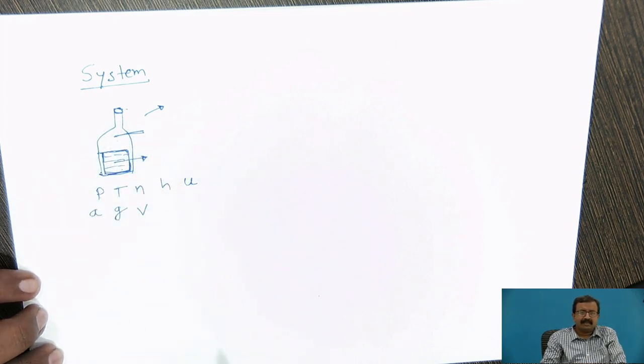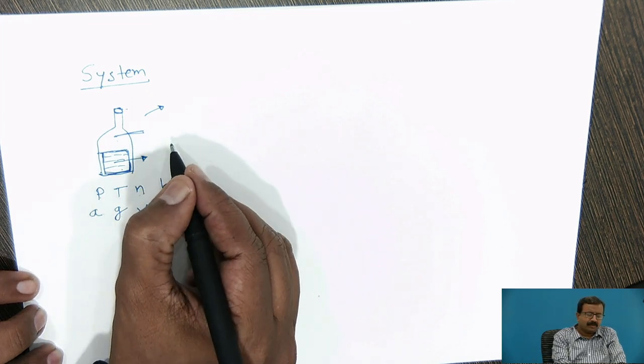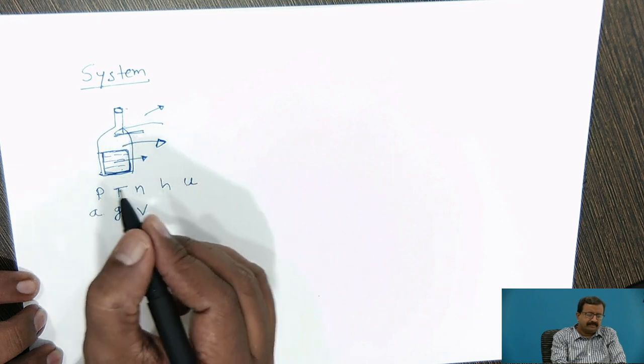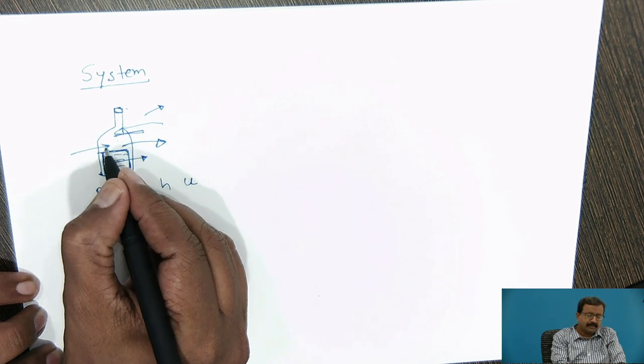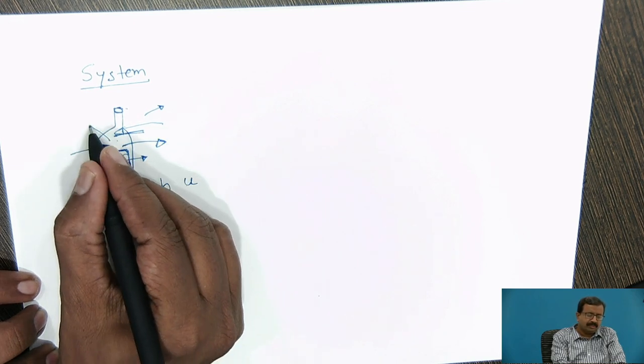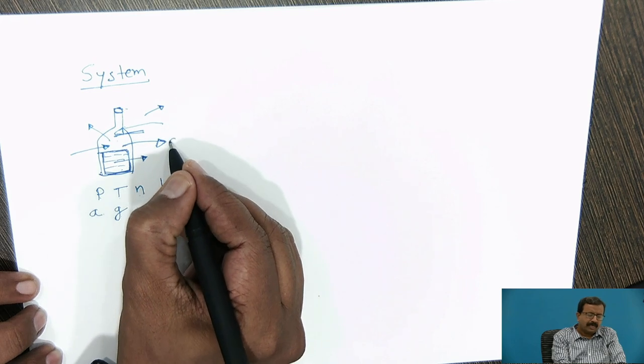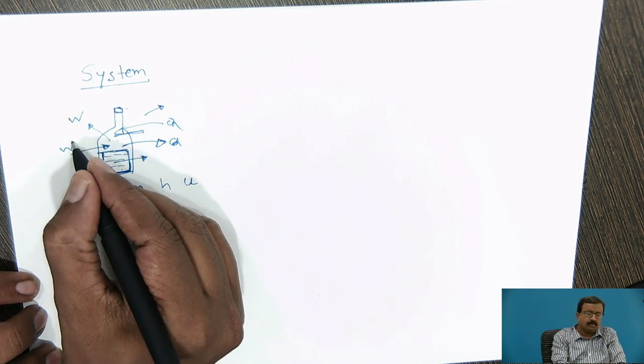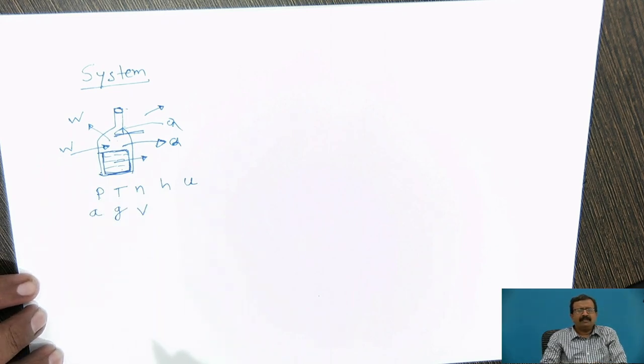The system must interact with the surrounding. This system may give energy, may get work, heat, may get some work, or this may produce some amount of work. Either it will be Q given in or out, W given in or out. By this, you will find that the concept of system is very flexible.